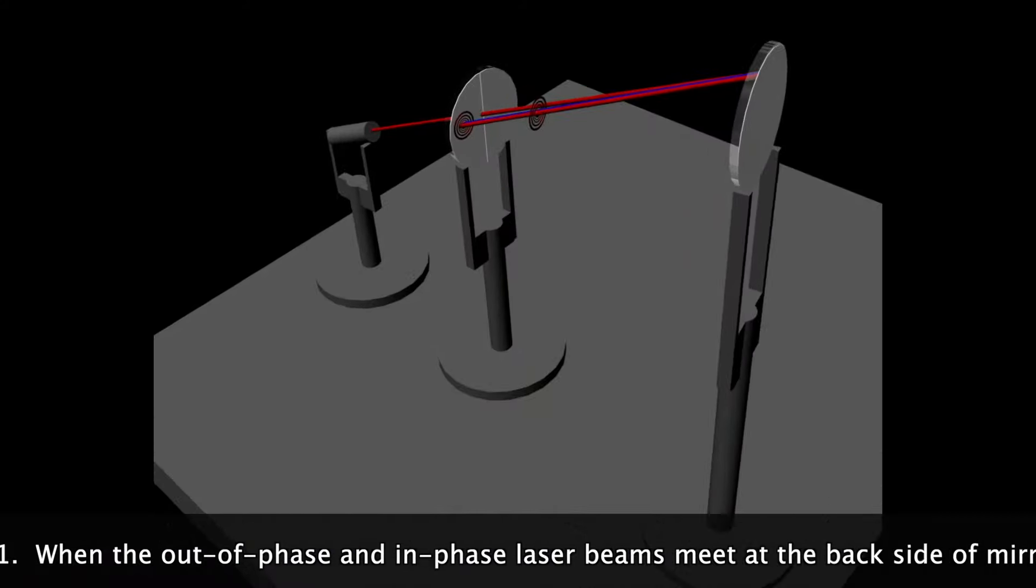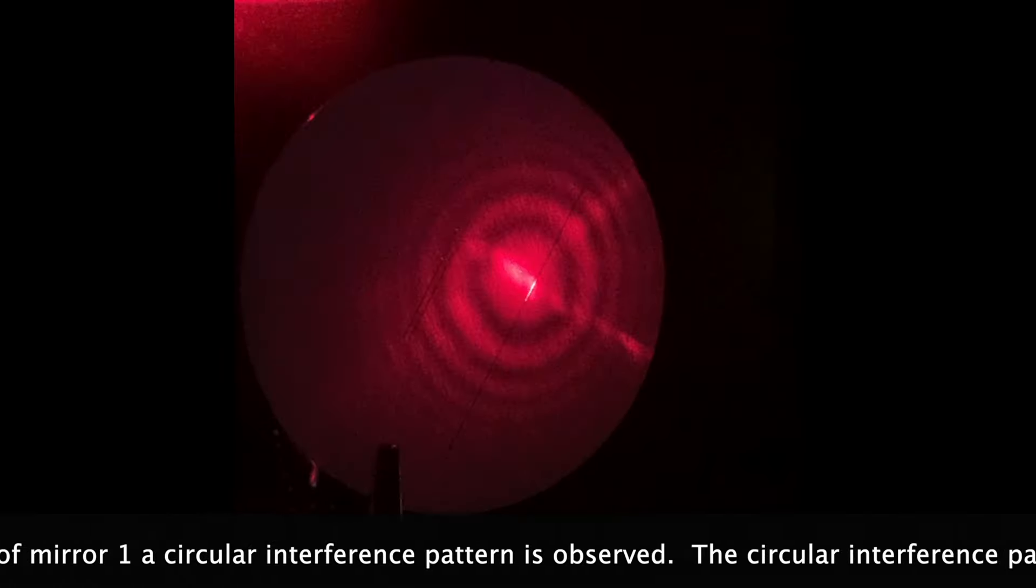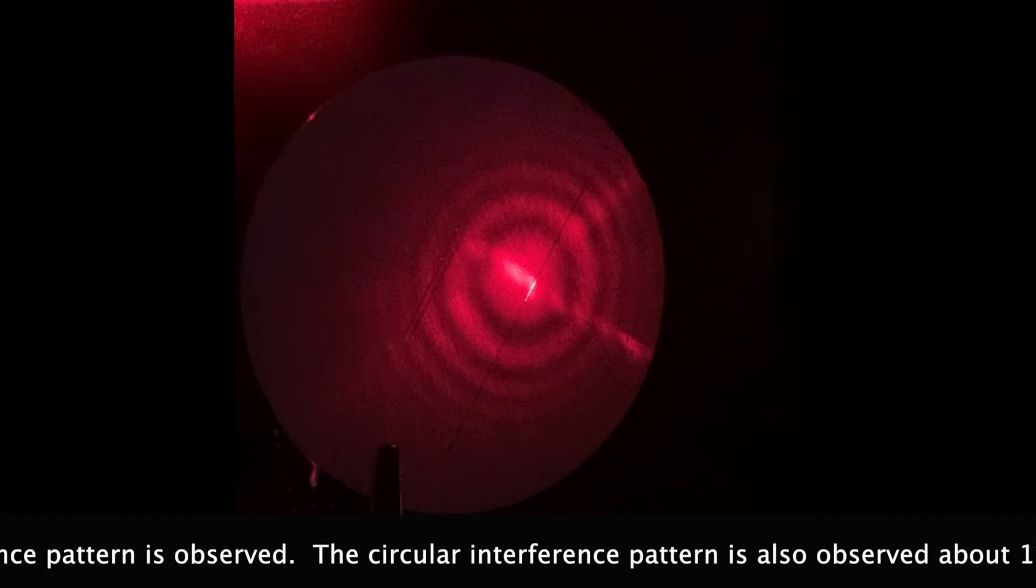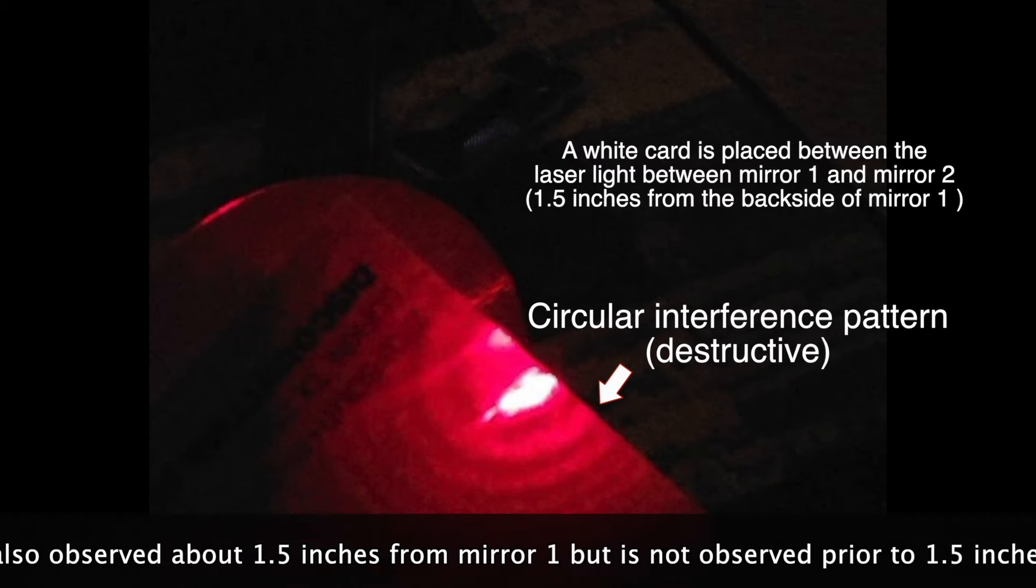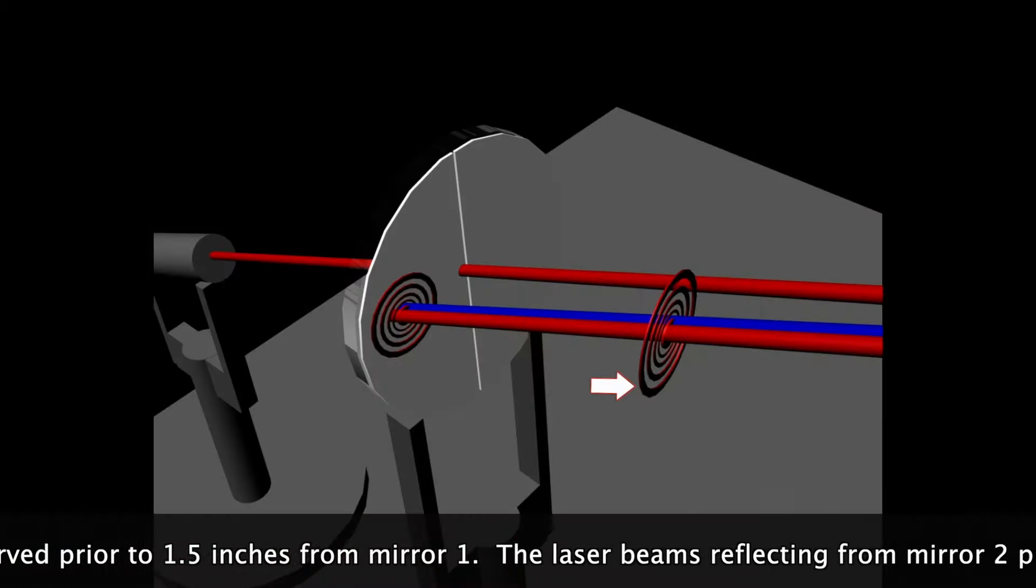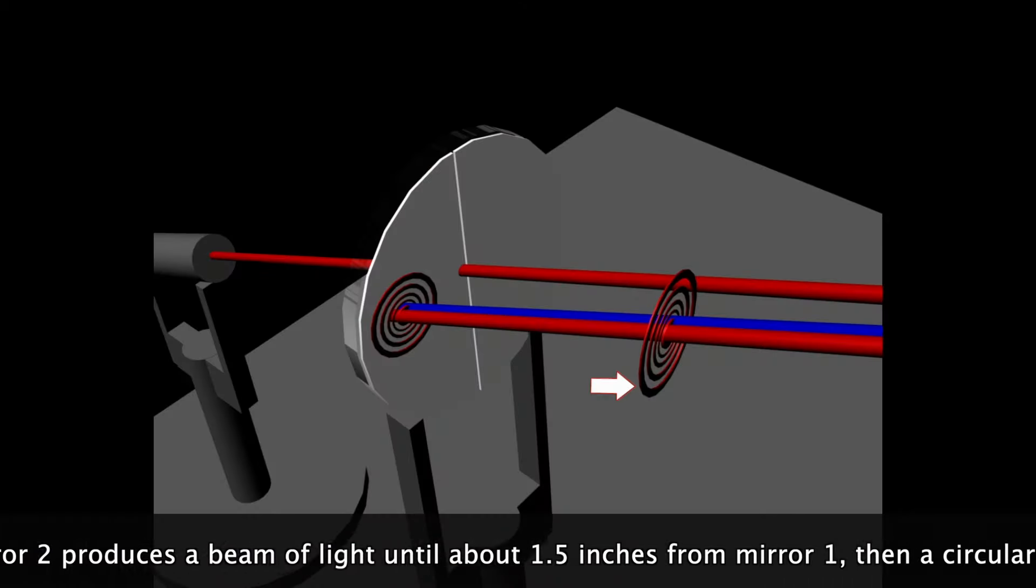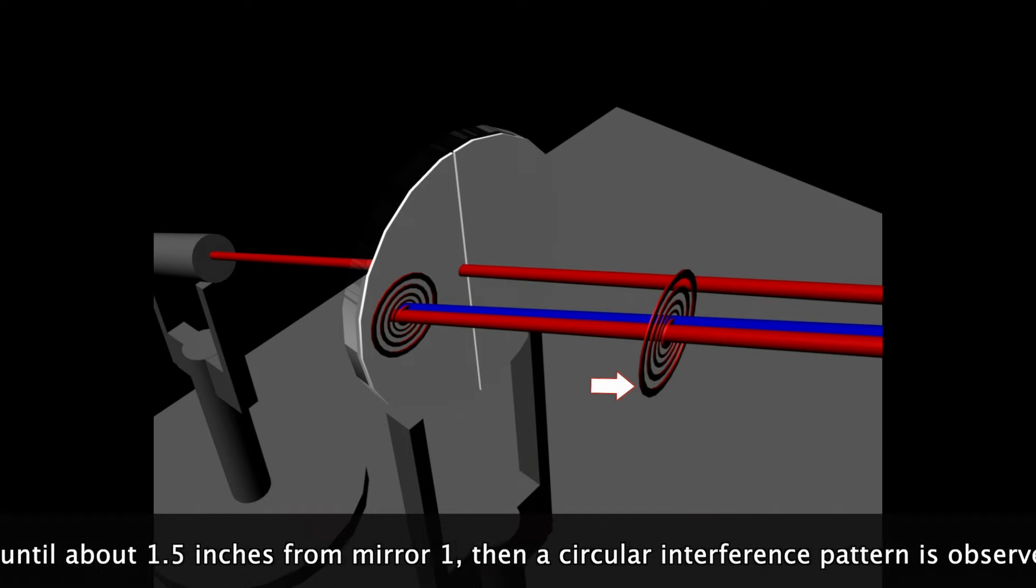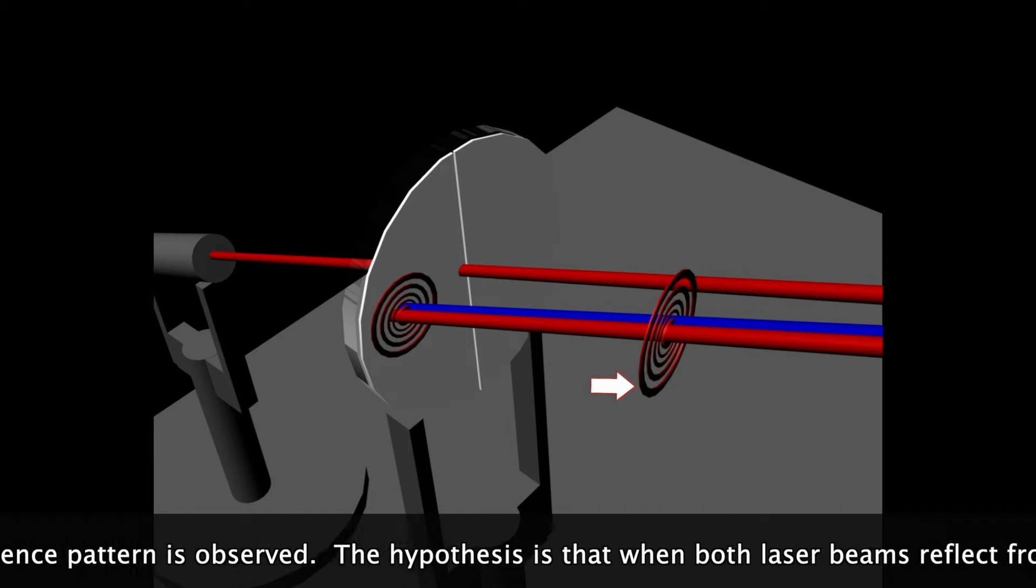When the out of phase and in phase laser beams meet at the back side of mirror 1 a circular interference pattern is observed. The circular interference pattern is also observed about 1.5 inches from mirror 1 but is not observed prior to 1.5 inches from mirror 1. The laser beams reflecting from mirror 2 produces a beam of light until about 1.5 inches from mirror 1 then a circular interference pattern is observed.